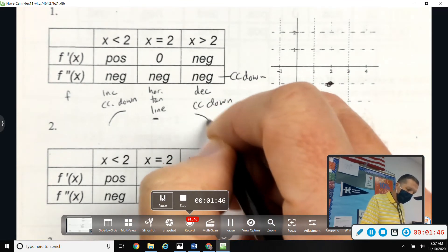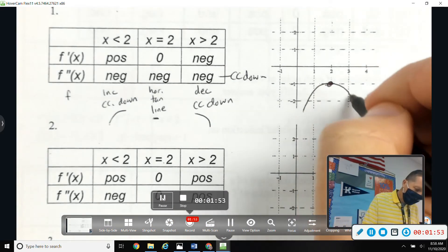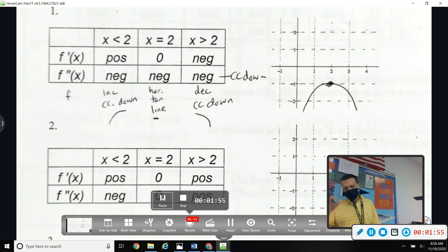So decreasing concave down looks like that. We try to put it all together, and yeah, we have a parabola-looking thing. It might actually be a parabola. We don't know enough to say that for sure, but it certainly looks like a parabola.